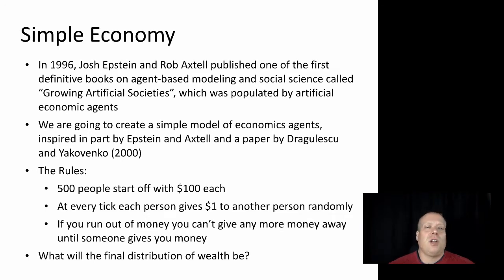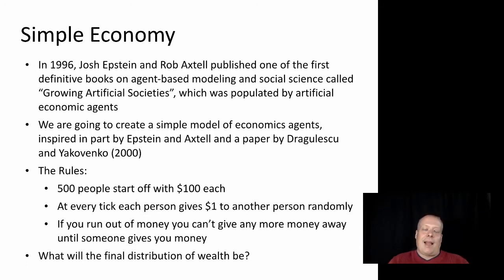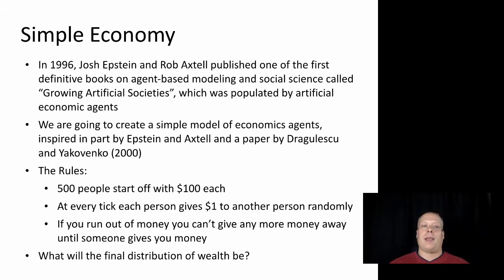We're going to start with some inspiration. In 1996, Josh Epstein and Rob Axtell published one of the first definitive books on agent-based modeling and social science called 'Growing Artificial Societies,' which was populated by artificial economic agents. Their basic model — sometimes referred to as Sugarscape — had agents that interacted in economic ways, and that was one of the first major examples.